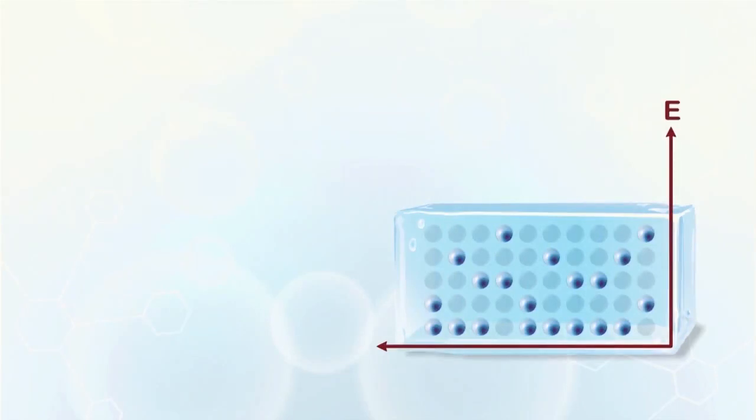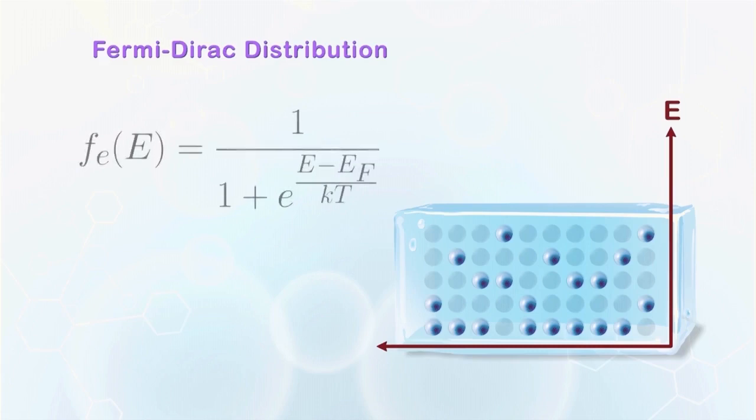The distribution of carriers in the states of a band is governed by a probability function called the Fermi-Dirac distribution function. And the Fermi-Dirac function is given by the expression shown here. The function describes the probability of a state at the energy level E being filled by an electron.